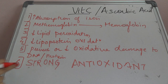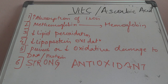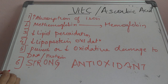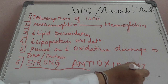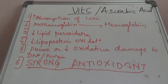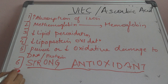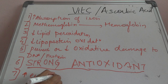Because vitamin C is a strong antioxidant, it increases iron absorption, converts methemoglobin to hemoglobin, decreases lipid peroxidation and lipoprotein oxidation, and prevents oxidative damage to DNA and protein. It also has a sparing effect on other antioxidants like vitamin A and vitamin E — this is called its sparing antioxidant action. Additionally, it increases endothelial-dependent vasodilation.